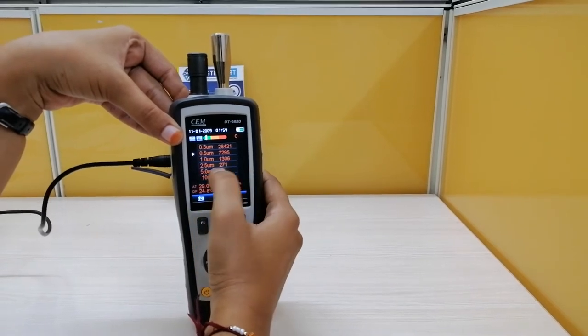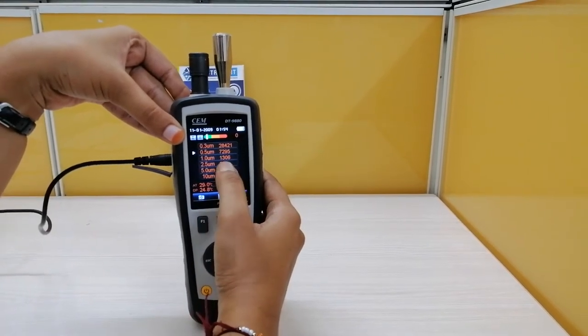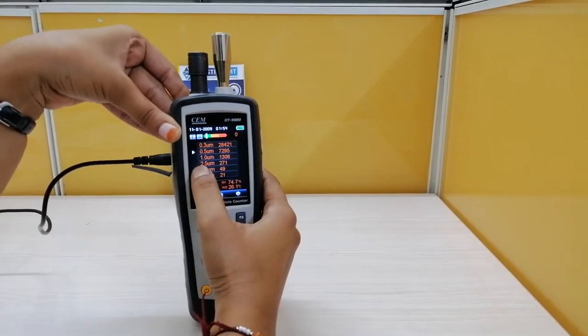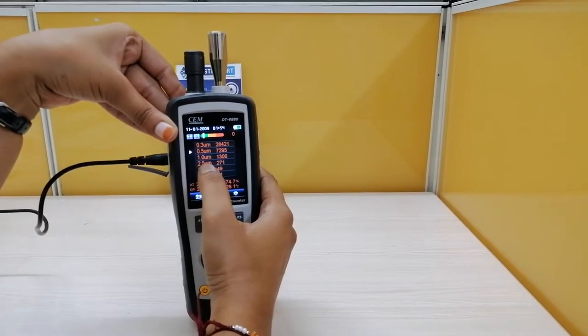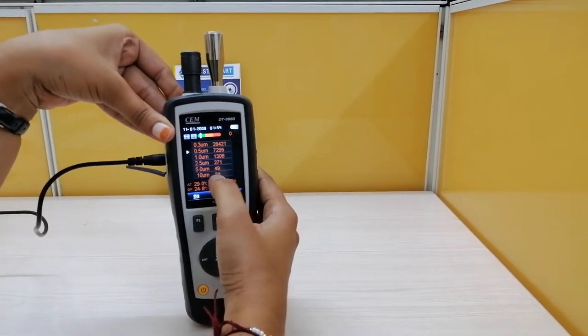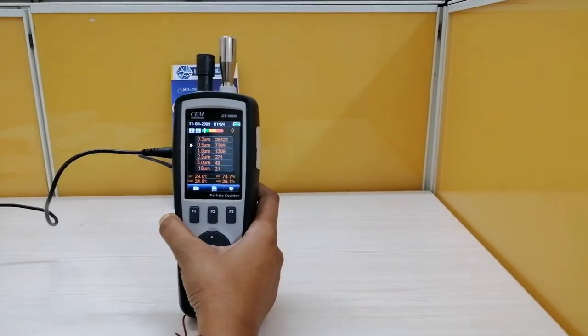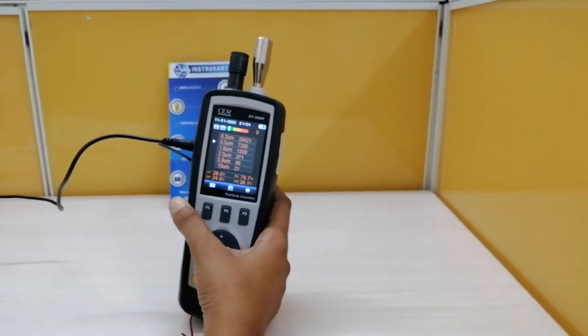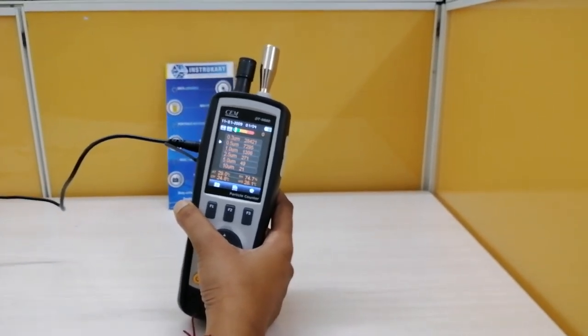It means, for example, let's say 271 - there are 271 particles measured in the size of 2.5 micrometers to 10 micrometers. This is in the case of cumulative. In differential mode, if the data are being read in differential mode...